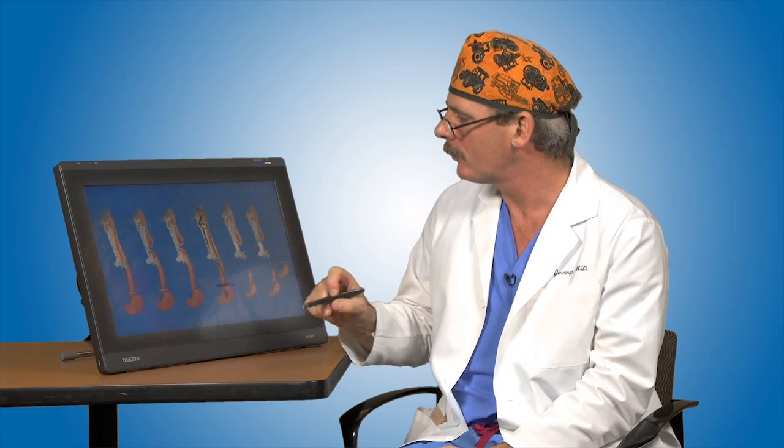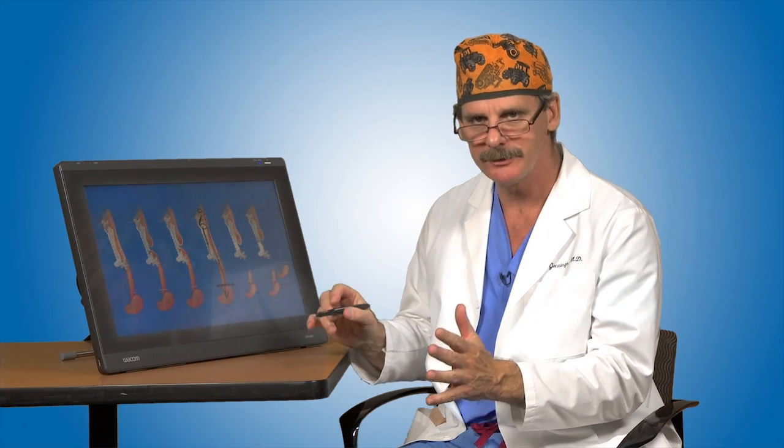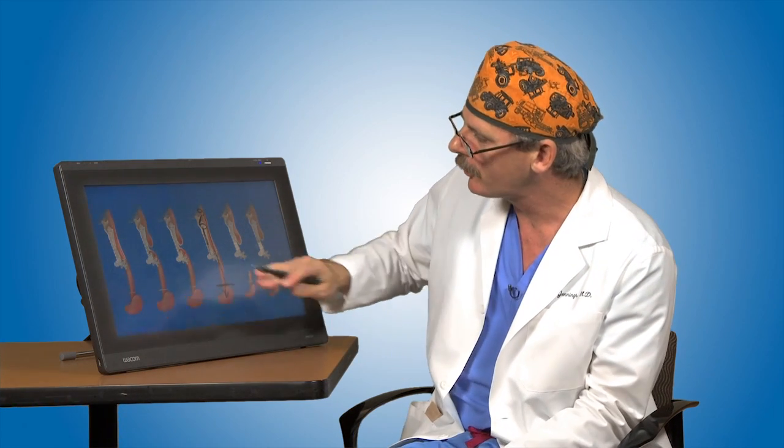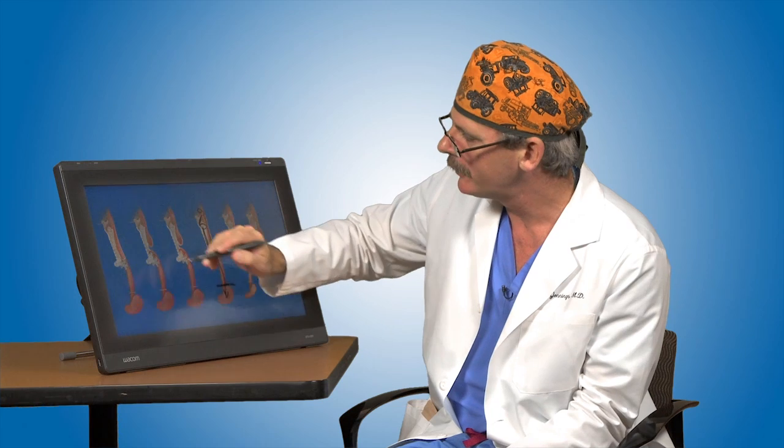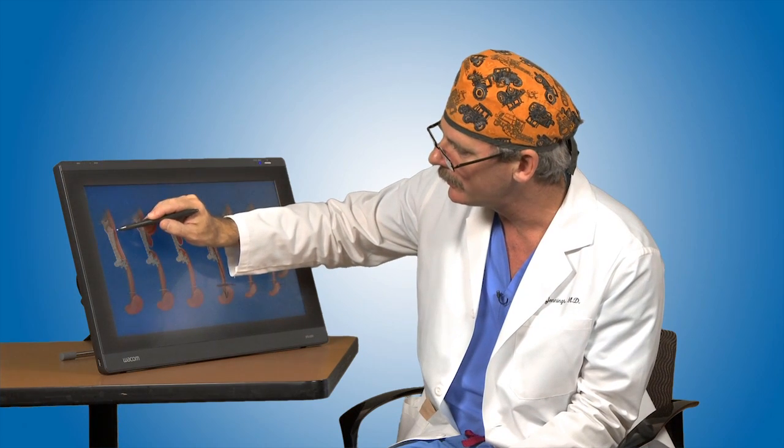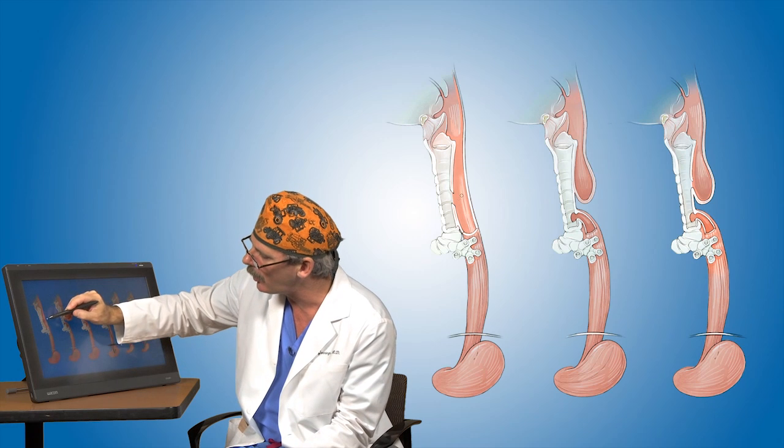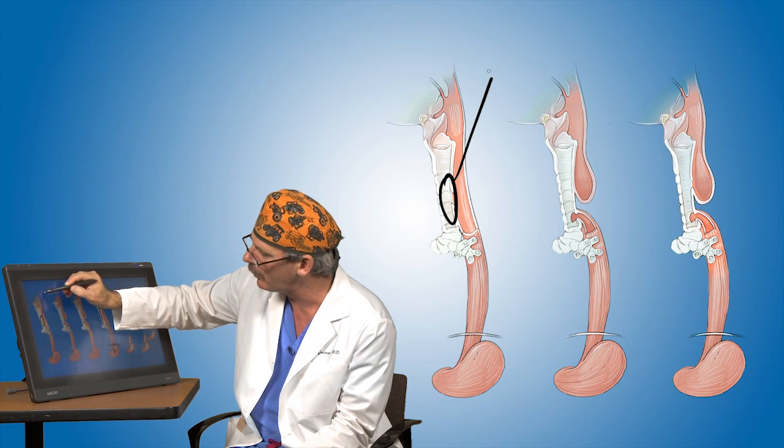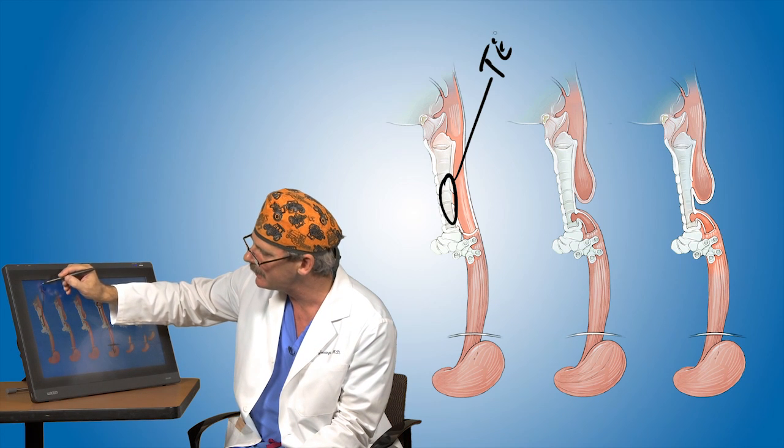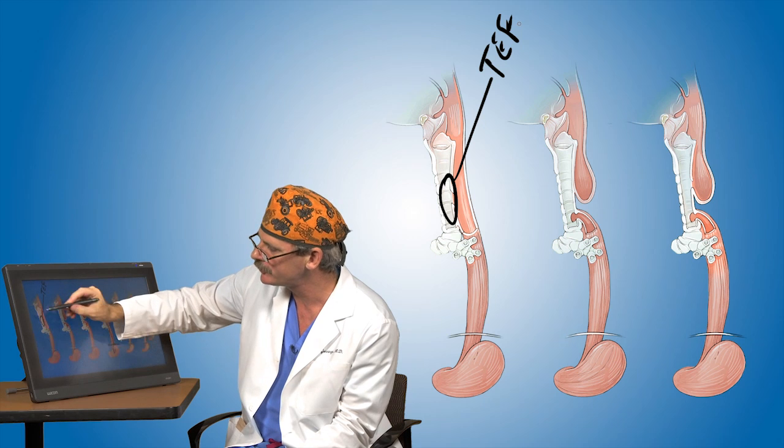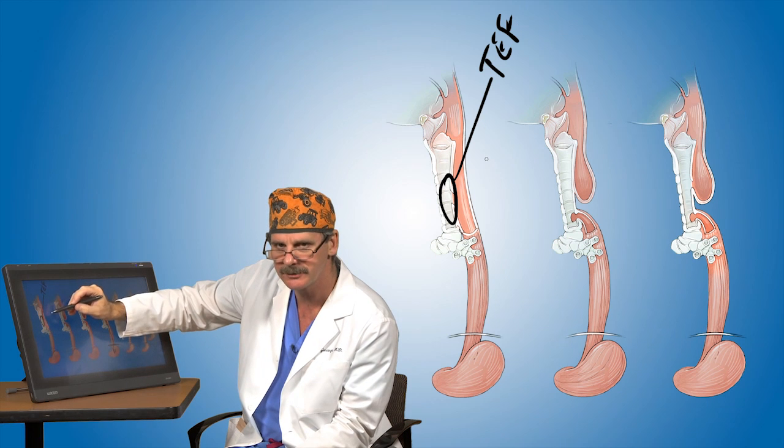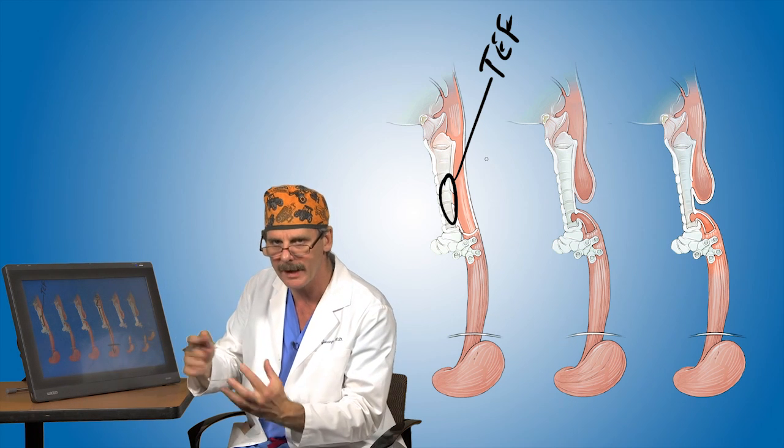So here we have various forms of esophageal atresia or esophageal maldevelopment. We can start over here in the simplest form. Remember that common wall or this intimate wall between the trachea and the esophagus. Sometimes that doesn't form correctly, and a little hole forms, and we call that hole a TEF. That stands for trachea esophageal fistula. And a fistula is just a hole or an abnormal connection.